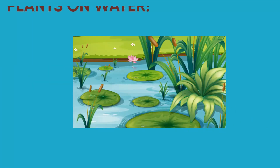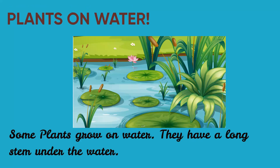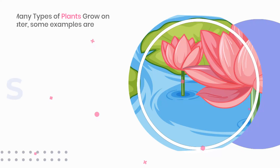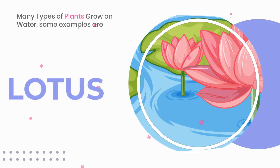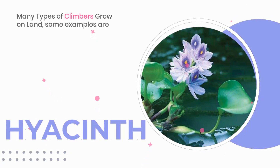Let's now talk about plants that grow on water. Some plants grow on water. They have a long stem under the water. Some examples are lotus, water hyacinth.